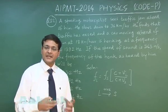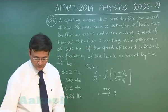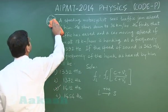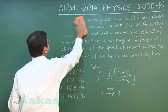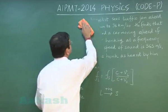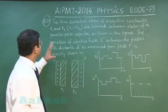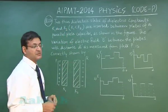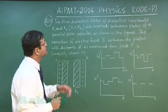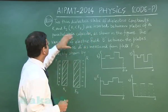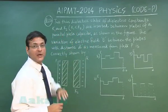Now let us discuss the next question, that is question number 23. In this question 23 it reads: two thin dielectric slabs. This is a question of electrostatics of dielectric constants k1 and k2, k1 less than k2 has been given to you.